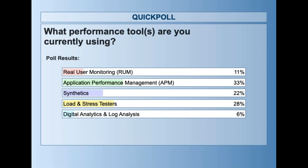Subsequently, RUM tools came out and matured. Phil Tellis wrote the Boomerang tag library, which has been instrumental in capturing real user metrics and is used as an underlying framework by most RUM tools. In terms of organizational maturity, I often see companies start with one or two tools, then realize they need more. Typically they begin with load/stress tools, then add either RUM or synthetic, and eventually realize they need both RUM and synthetic data together.